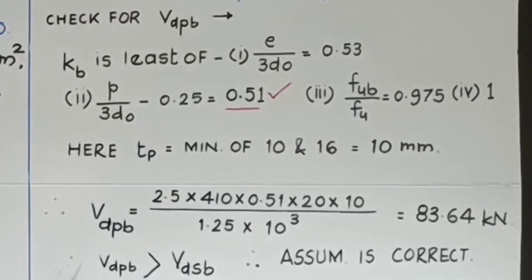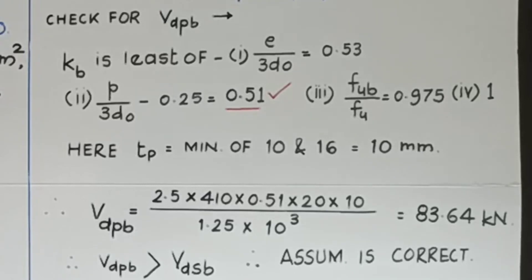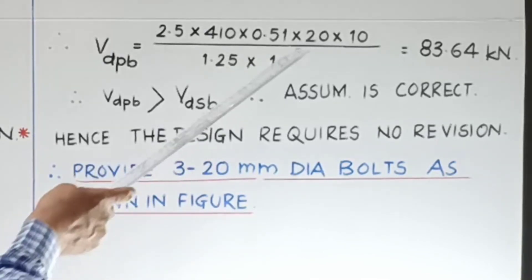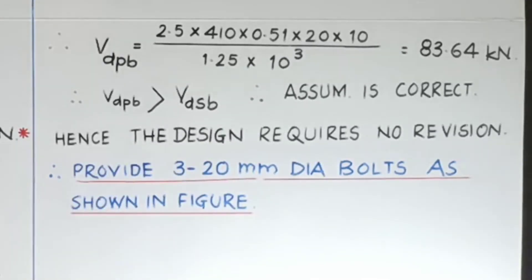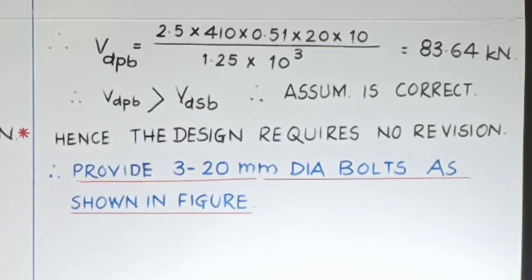You can very easily see that VDSB is 45 point something, VDPB is 83.64, that is whatever assumption we have made is correct. Therefore, the design requires no revision at all. If this value comes out to be less than this, then you have to revise whole design. So, this design is complete.